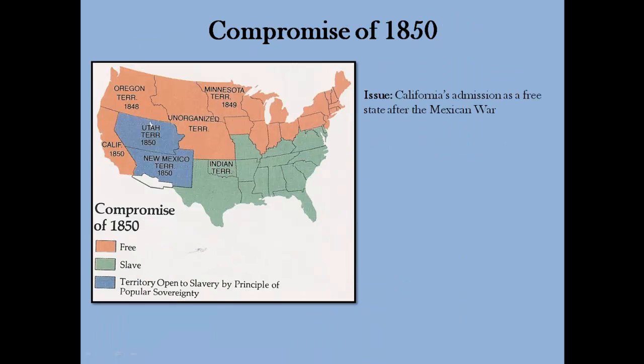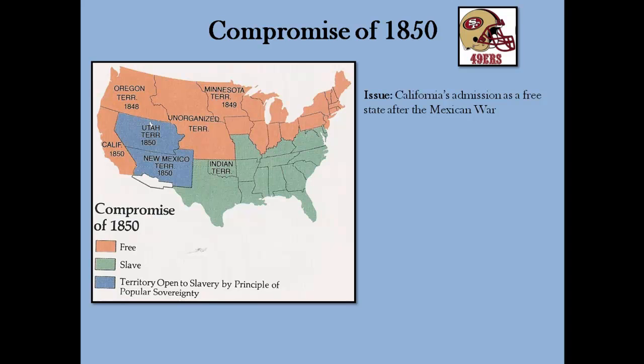In 1850, California applied to join the United States as a free state. California's population dramatically increased after the Mexican War when the United States bought the territory from Mexico. Also during this time, gold was discovered, leading to the California gold rush in 1849. These people who rushed into California were known as 49ers — which is how the San Francisco 49ers got their name. Southerners argued that a majority of California was south of the 36°30' line if it were drawn across the continent, and some Southerners started calling for secession, viewing the potential of California as a free state as a threat to their way of life.